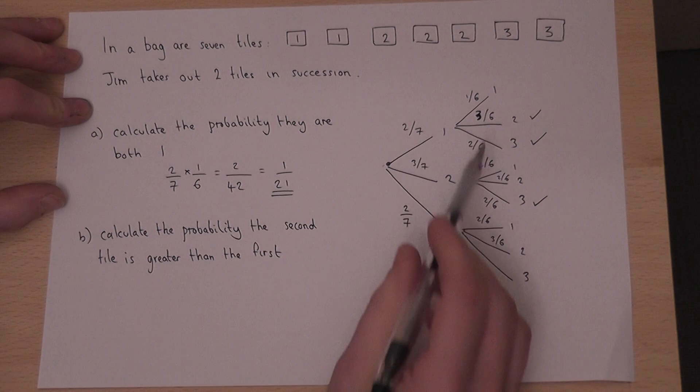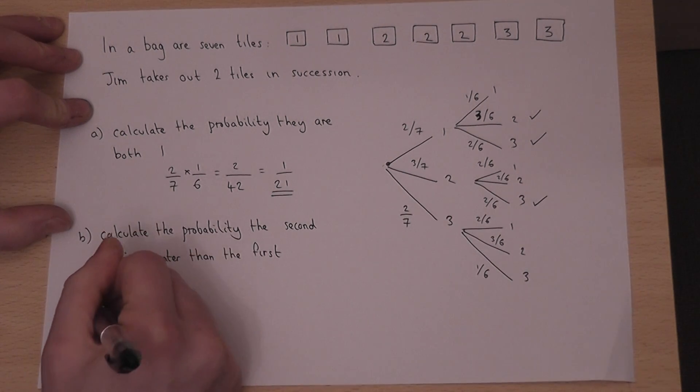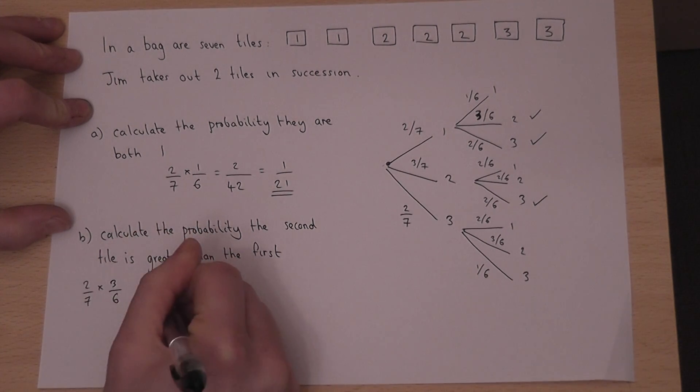So I must work out each of the options separately. Two-sevenths times three-sixths, which is six over forty-two. Three-sevenths times two-sixths, which again is six over forty-two.